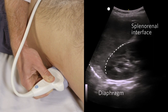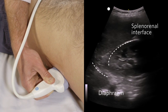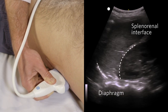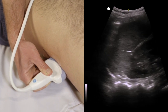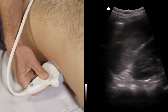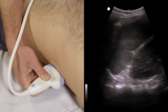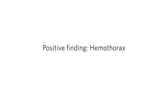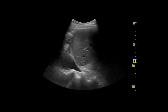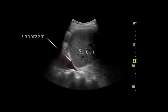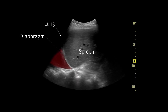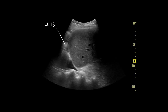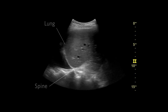Slide your probe cephalad to visualize the diaphragm and look above the diaphragm for signs of fluid in the thorax. In this clip, we can see fluid in the left thorax above the diaphragm interfaced against aerated lung with continuation of the spine above the diaphragm.